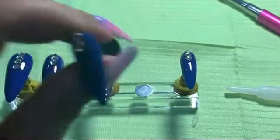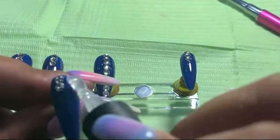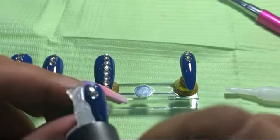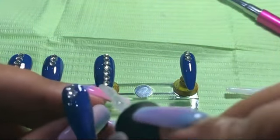Now that this nail is dry, we're going to take our top coat. We're going to go over and around the rhinestones. Again, when you go over the rhinestones, you want to use a very, very light hand so that you don't have a bulk of gel polish all on and around your rhinestones.